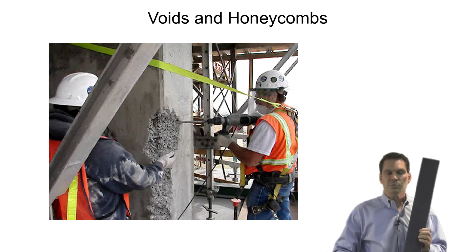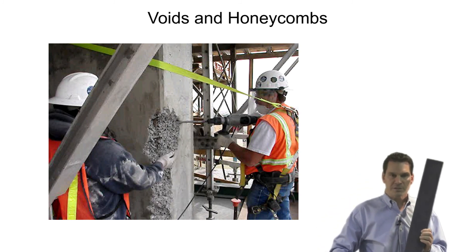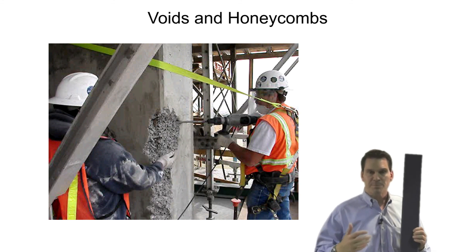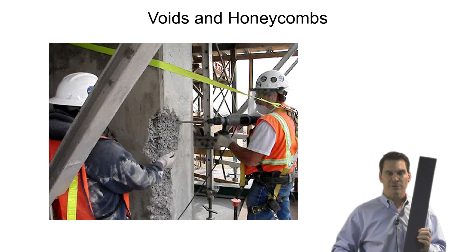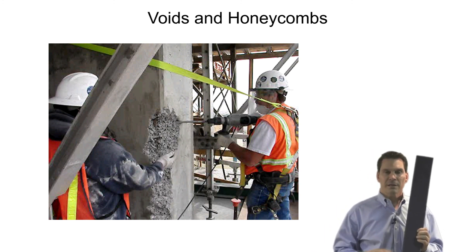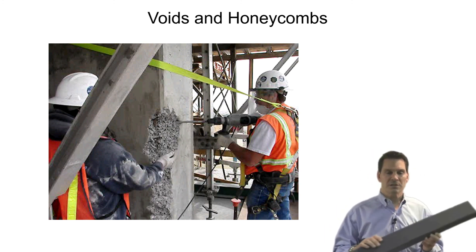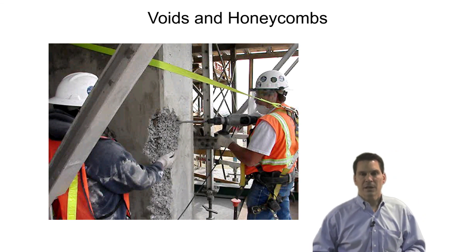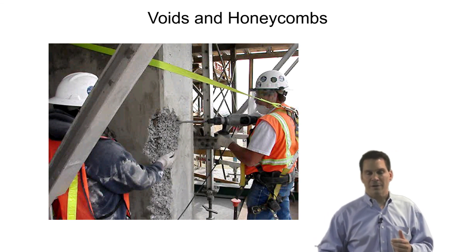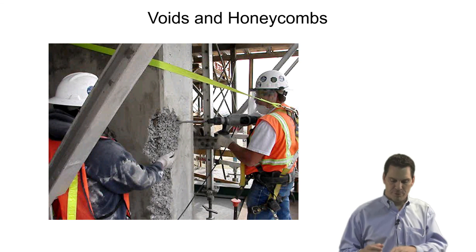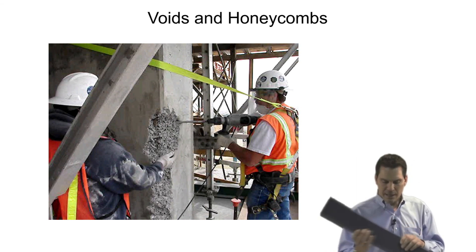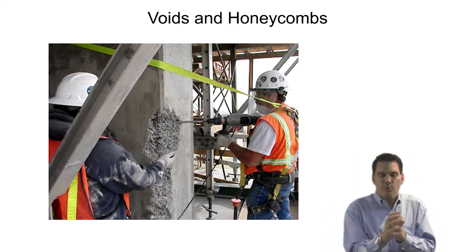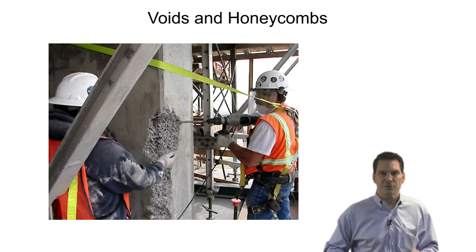In both cases, as you can see in the slide, we're chipping that out and we're going to have to replace it with some type of process to fill that void — usually using some type of very flowable grout or self-consolidating concrete, and usually also having to use some type of form and pump, a pressurized placement technique that will allow the material to be forced up into that shape.